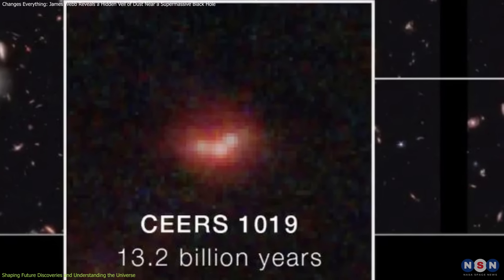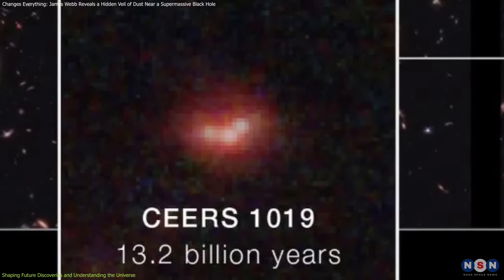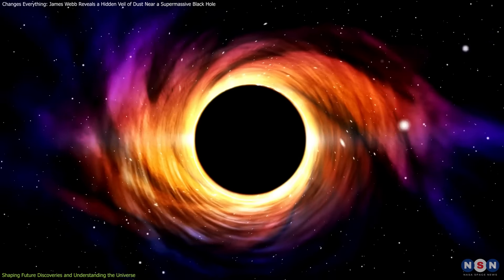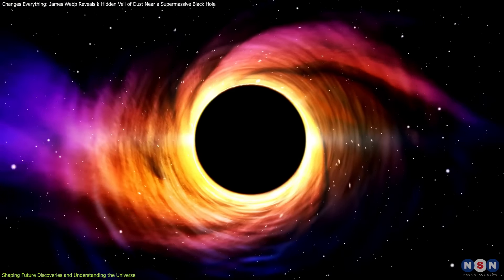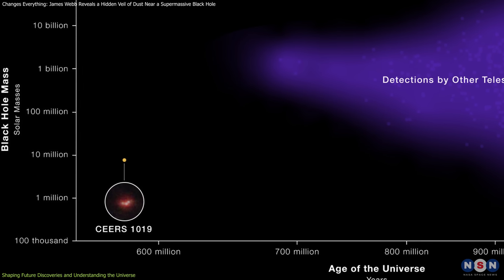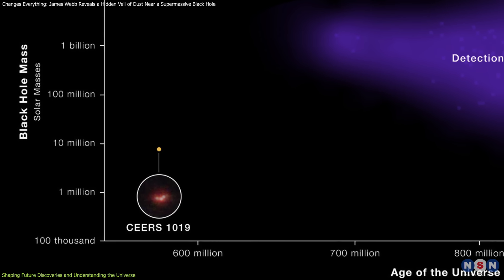Meanwhile, Sears 1019, another key discovery, has revealed the most distant active supermassive black hole yet found. This black hole, which existed just over 570 million years after the Big Bang, is not only remarkable for its distance,